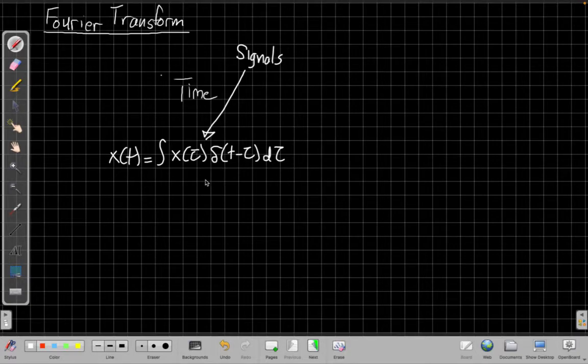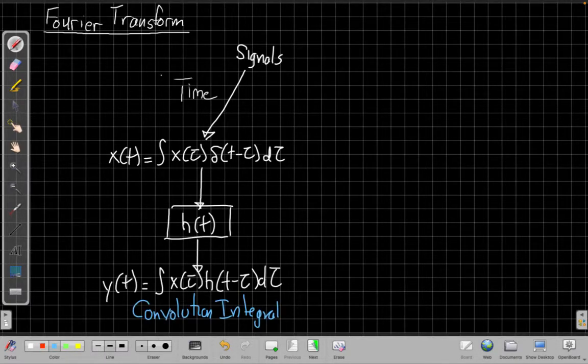And then that led us to an output that was the convolution. By thinking of this, we said for LTI systems, we can say the response to each of these deltas is the delayed impulse response, and we get the convolution integral. That's the time view of the world where we're thinking about the signal one instant at a time.